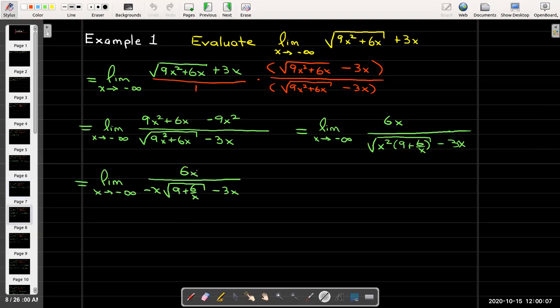So now I have the limit as x approaches negative infinity of 6x over negative x times the radical of (9 + 6/x) then minus 3x.